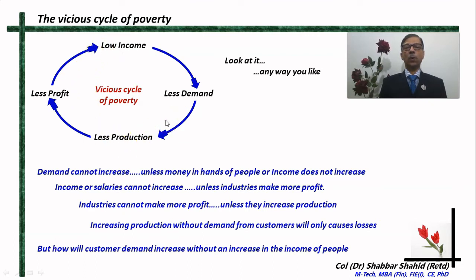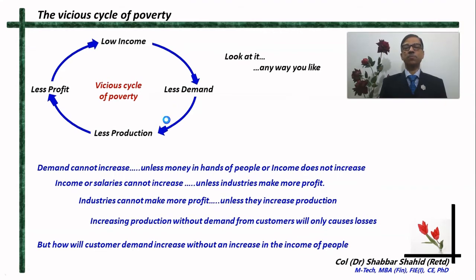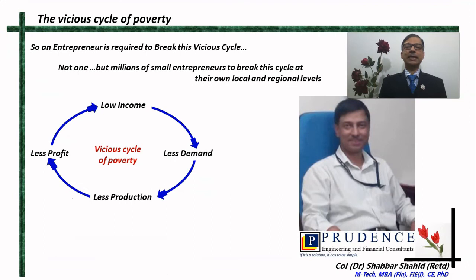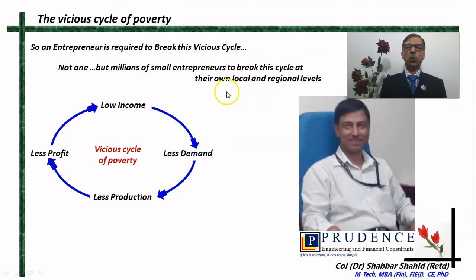Therefore, this cycle is vicious. Whether you see it clockwise or anticlockwise, the cycle restricts itself to poverty. To break this cycle, you require entrepreneurs — not one, but millions of small entrepreneurs at the local level, right from the level of Maya Devi and that school teacher Janet, and small small industries. You require millions of such entrepreneurs to break this cycle of poverty at their local and regional level, and ultimately that cycle at the national level will break.